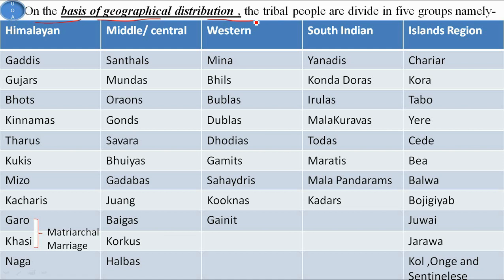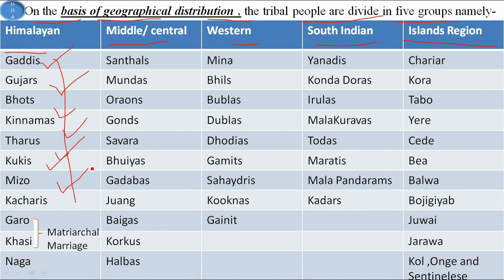On the basis of geographical distribution, tribal people are divided into five groups: Himalayan, Middle or Central Indian, Western Indian, Southern Indian, and Island regions. The main tribes of the Himalayan region are Gaddis, Gujars, Bhots, Kinnaras, Tharus, Kukis, Mizos, Khasis, and Garos. Garo and Khasi are famous for matriarchal marriage — that is, Ghar-Jamai. The last tribe in this region is Nagas.